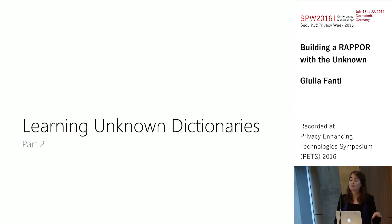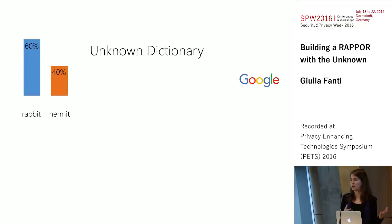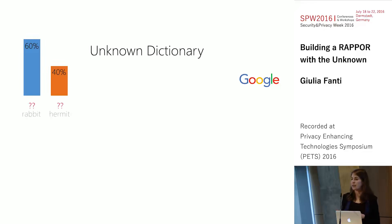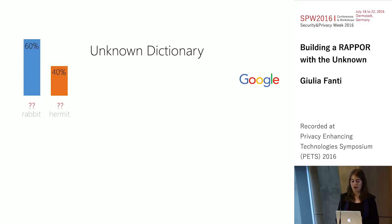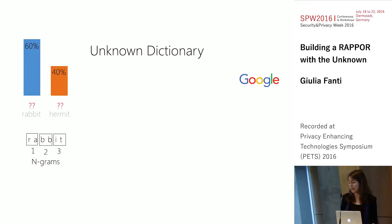Now we can use this for part two: learning unknown dictionaries. The problem is we have a distribution we're trying to learn, but the aggregator doesn't know which strings are in the data dictionary. If that's the case, the current decoding mechanism in the original RAPPOR paper fails — it gives you the wrong distribution.